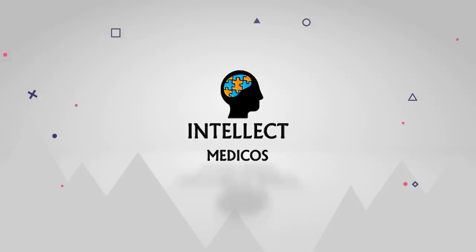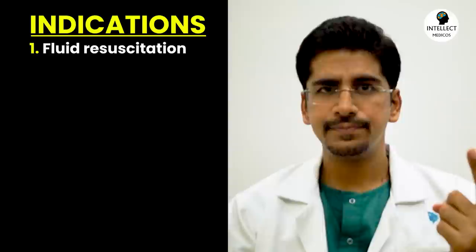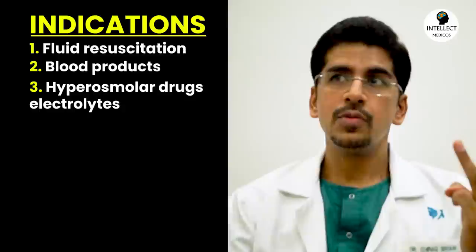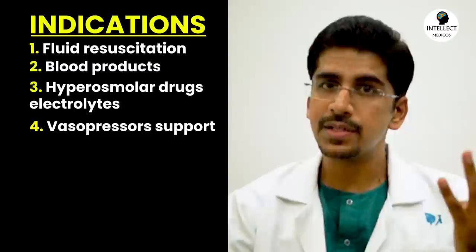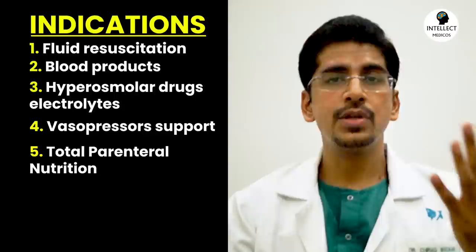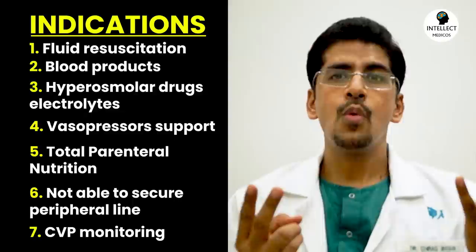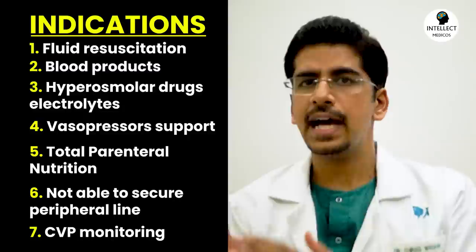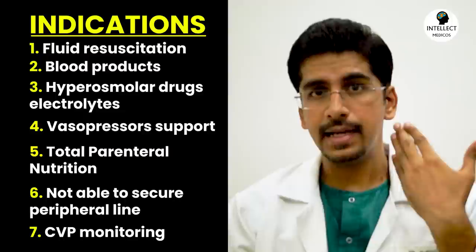Coming to the indications. First, whenever you have to resuscitate a patient with fluids. Second, to administer blood products. Third, to give drugs or hyperosmolar electrolytes — basically whenever any drug has an osmolality more than three times that of plasma, you need a central line. Fourth, to give vasopressors like noradrenaline, adrenaline, or dopamine. Fifth, to give total parenteral nutrition. Sixth, whenever you are not able to secure a peripheral line. And seventh, whenever you have to monitor central venous pressure — although nowadays we don't rely on CVP alone for hemodynamic monitoring, but if you want to see CVP, you need a central line, from either internal jugular or subclavian.